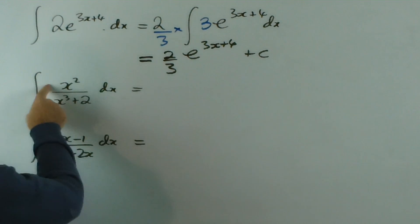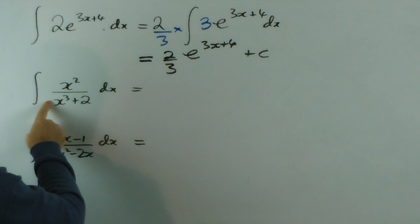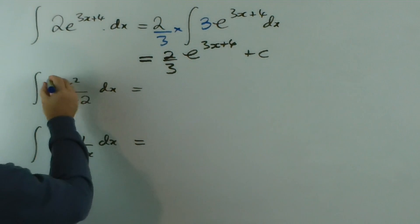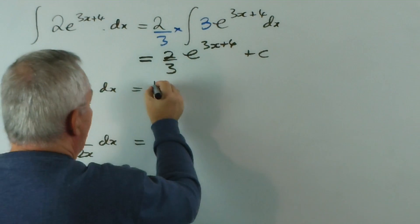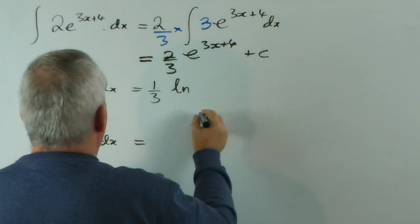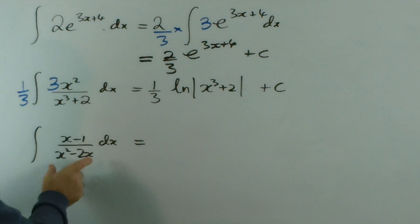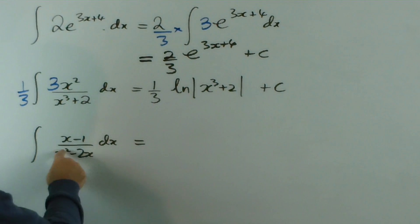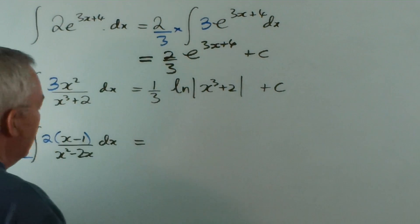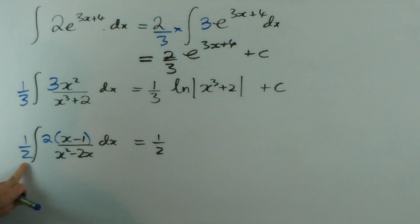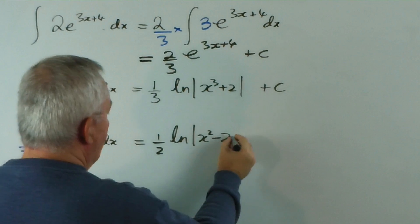The next one — we have a function over a function, which gives a suspicion that we're going to get a logarithm. If we take the derivative of the bottom, we get 3x squared, which is very similar to the numerator. So I want a 3 there and a third out the front. This is now exactly what we want, so the result is one-third log of x cubed plus 2. This next one: the derivative of x squared minus 2x is 2x minus 2, which is exactly twice the numerator. So with a factor of one-half, the integral is one-half log of x squared minus 2x plus c.